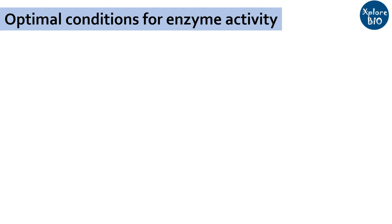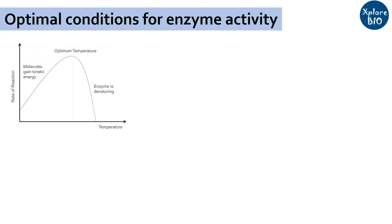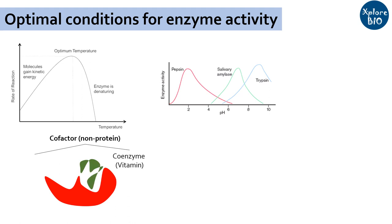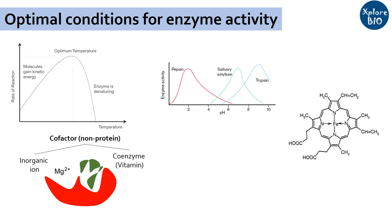Let's have a look at some of the necessary conditions and requirements for optimal enzyme function. For proper functioning of enzymes, an optimum temperature and pH is essential. Most enzymes in our body work at body temperature, that is 37°C. Some enzymes require acidic pH, while others need basic pH, and some may work at neutral pH. Additionally, certain enzymes may require a non-protein cofactor, which may be a coenzyme such as a vitamin, or an inorganic ion such as calcium or magnesium, for proper functioning. When a cofactor is tightly bound to the enzyme, it is called a prosthetic group — for example, the heme of hemoglobin.